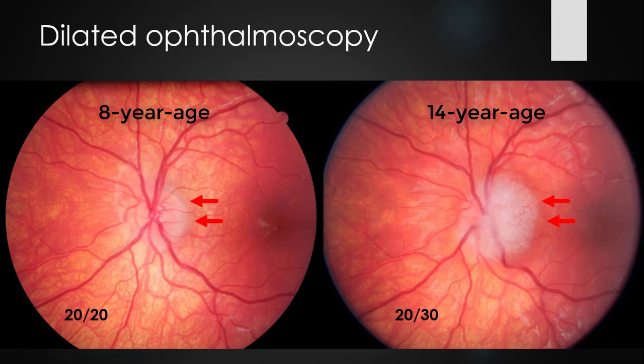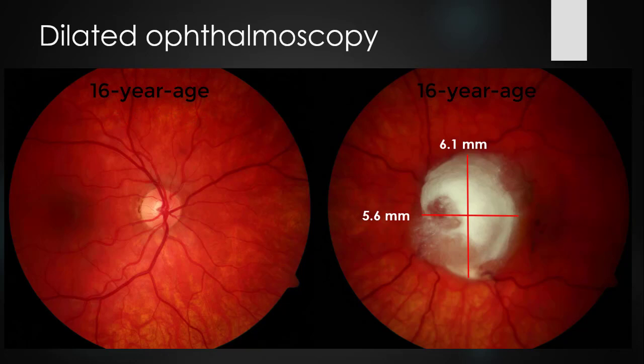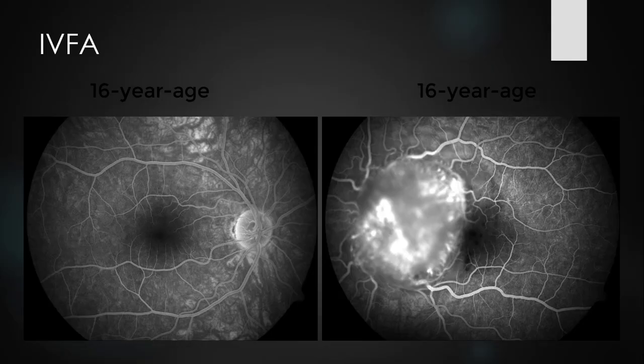At this stage, the patient was still asymptomatic with 20/30 vision. The lesion continued to grow recently, with visual acuity reduced to 20/100 in the left eye.